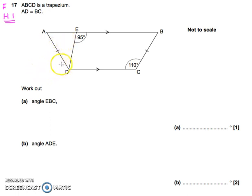ABCD is a trapezium. AD is the same length as BC, which means that this is an isosceles trapezium. That's an important bit of information there for the second question.